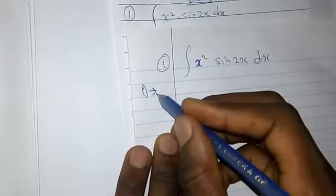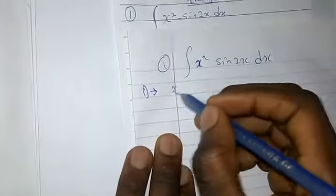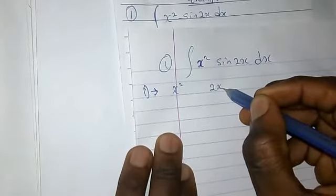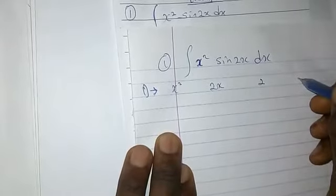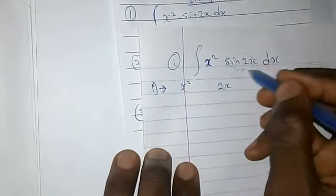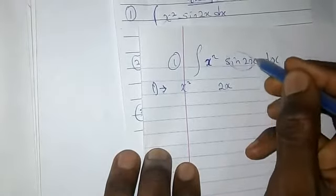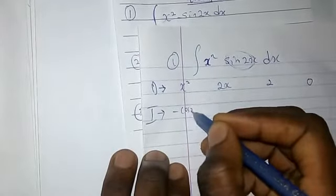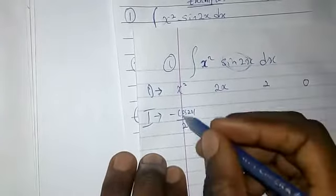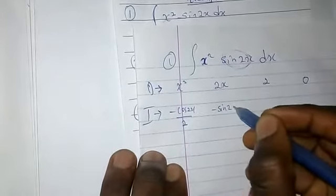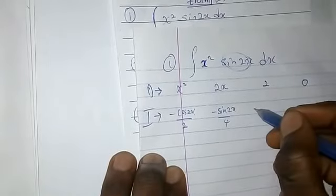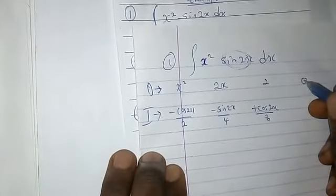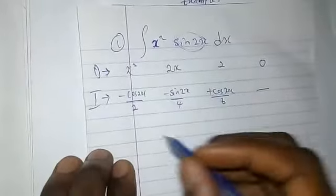Bring down x squared, then differentiate to get 2x, continue to differentiate to get 2, then differentiate again to get zero. Now for the I column, you start integrating: integrate sine(2x) to get −cos(2x)/2, integrate that to get −sin(2x)/4, then integrate to get cos(2x)/8. When you reach zero in the D column, just dash it — you stop there.